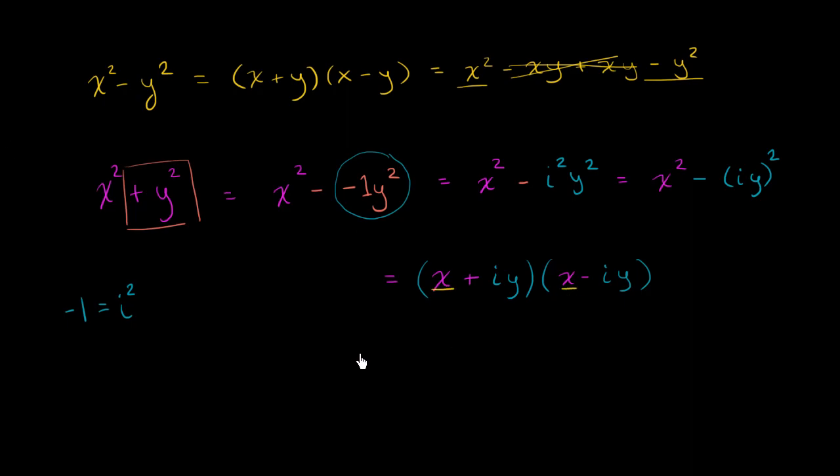x times x is x squared. x times negative i y is negative i x y. And then i y times x is positive i x y. And then finally, i y times negative i y is equal to negative i squared y squared.